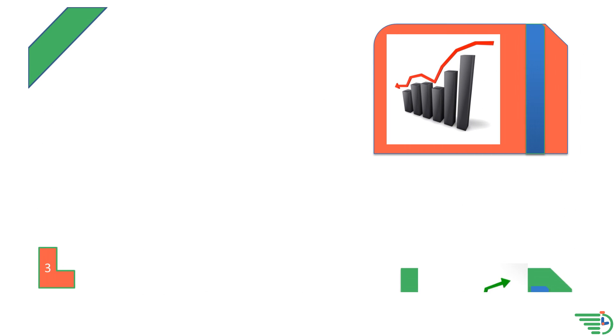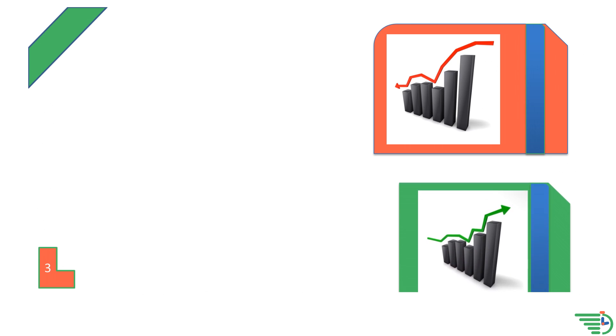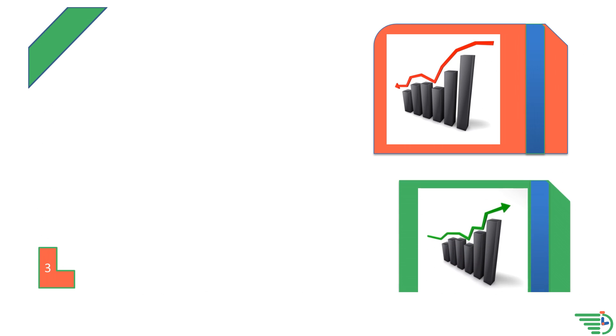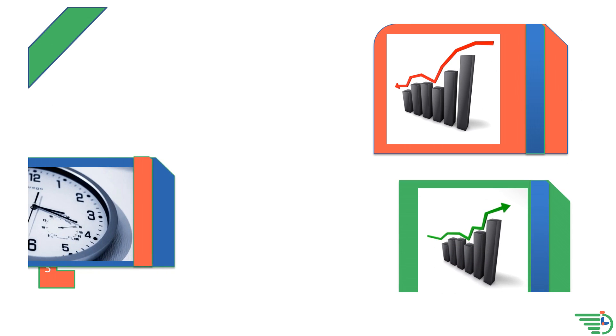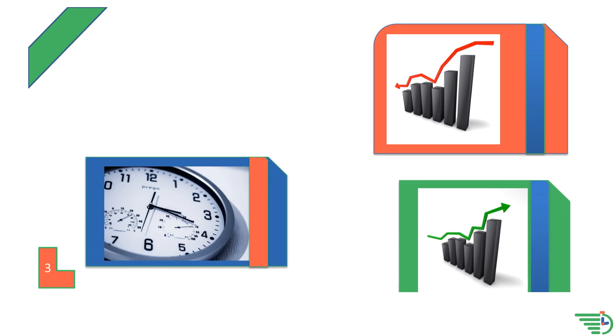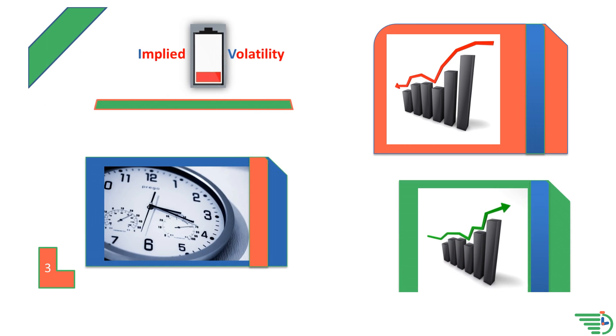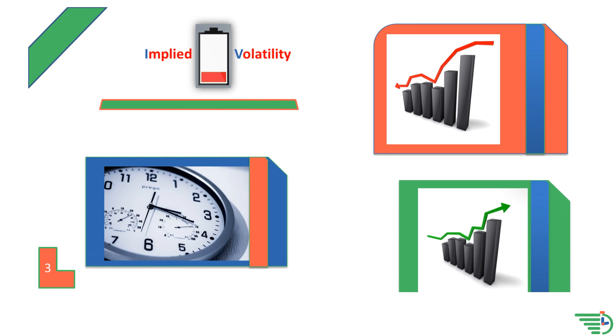Well, when purchasing options, you want to follow the buy low and sell high model. And since options are priced based on time, strike, and volatility, you want the volatility as low as possible for your potential purchase.